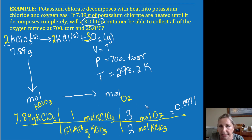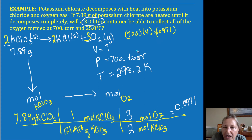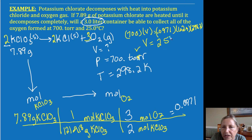Now I'm going to plug that into PV=nRT up in this corner. I have a pressure of 700 Torr. I need my volume. My moles we just calculated from the dimensional analysis. My R is 62.4 for Torr. My temperature is 298.2 Kelvin. Solving for that volume, I get 2.58 liters.